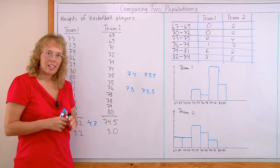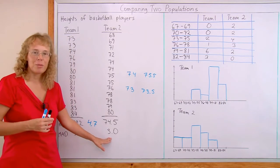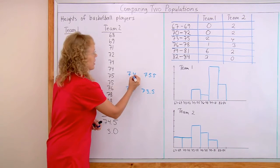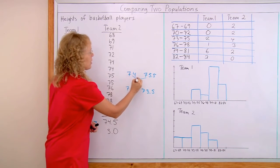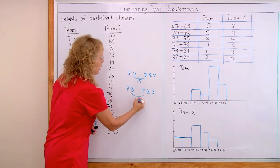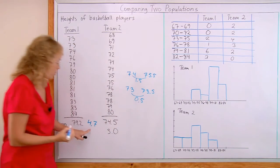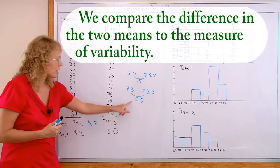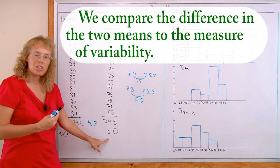How can we tell if these differences in the mean heights between two groups are significant differences? The answer lies in the measure of variability. We will check with this. We check the difference here. The difference between the means here is 1.5. Here it would be 0.5. Here it was 4.7.